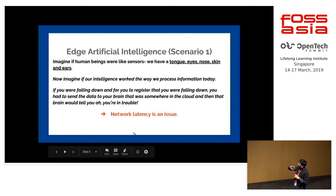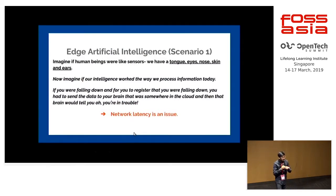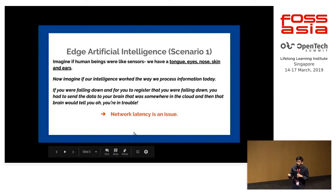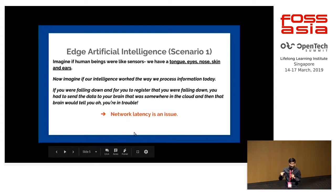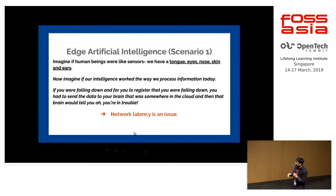Think of a scenario where the human body works as a sensor and you are falling. To make that information reach your brain as a central system — you give that sensor information to the brain and it gives back — there's a lot of latency. If we keep working in the cloud way, there's a lot of network latency.